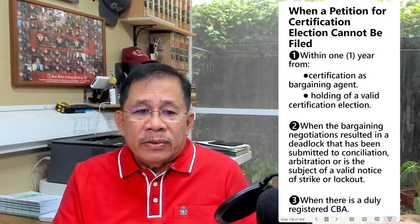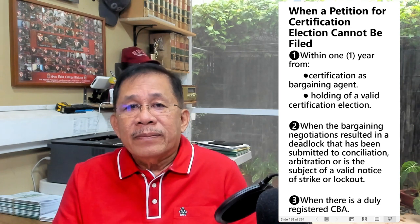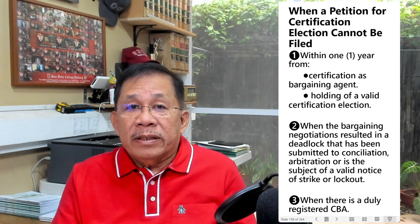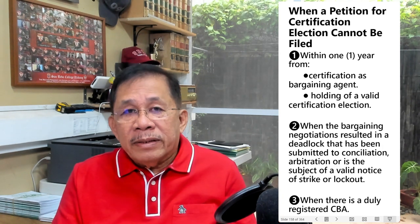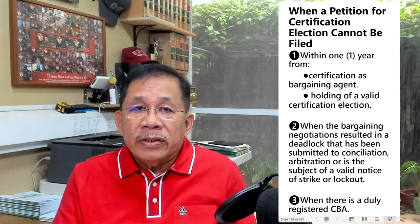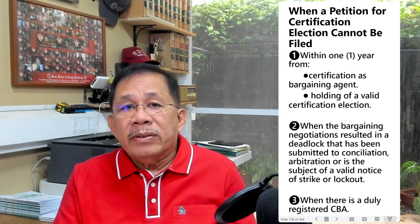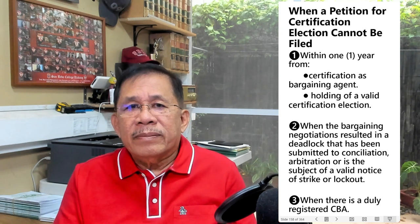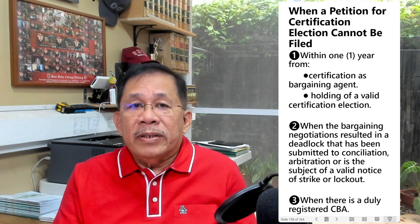There are situations where a petition for certification election cannot be filed: first, within one year from holding a valid certification election or certification as bargaining agent; second, when CBA negotiations resulted in a deadlock submitted to conciliation, arbitration, or is the subject of a notice of strike or lockout; and third, when there is a duly registered CBA.